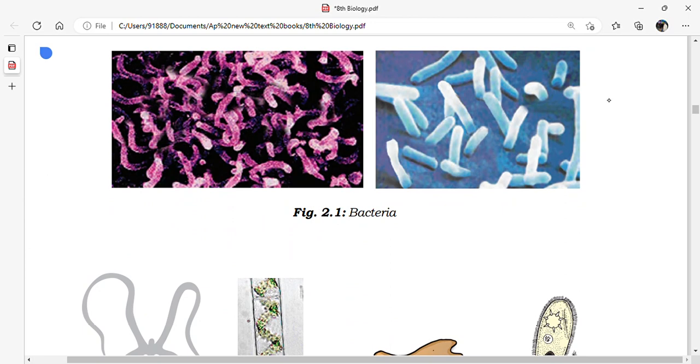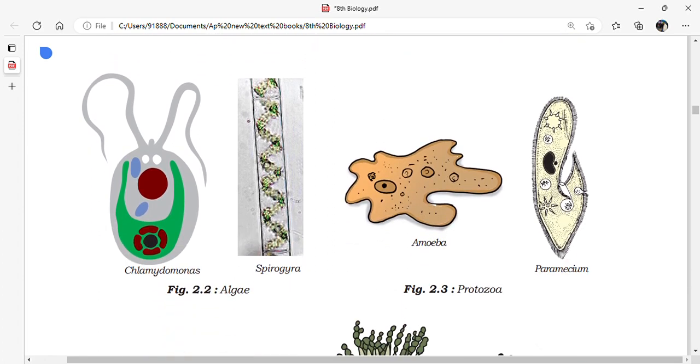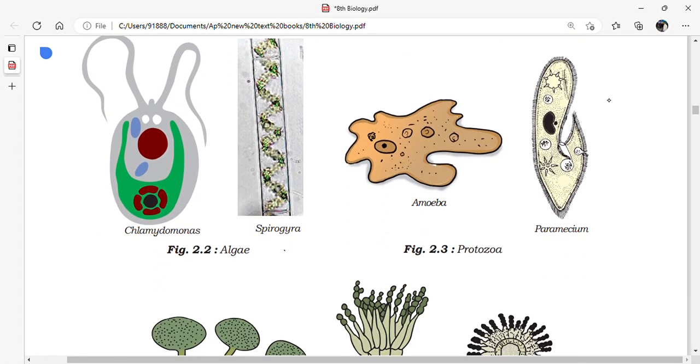This one is Lactobacillus bacteria which is present in our curd. These are some microorganisms that belong to algae. For example, Chlamydomonas and Spirogyra are examples of algae.